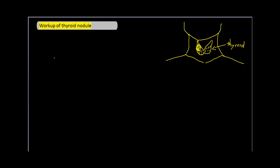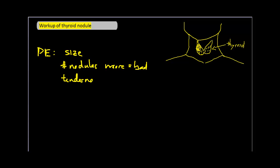A physical exam alone will not allow you to definitively rule in or out any diagnoses, but we still look for some important aspects of the nodule — including the size of the mass, the number of nodules (multiple nodules make TMG more likely), tenderness which might indicate thyroiditis, lymph node involvement, and whether the mass is fixed versus movable. A fixed mass is more likely cancerous, while a movable mass is possibly cystic.